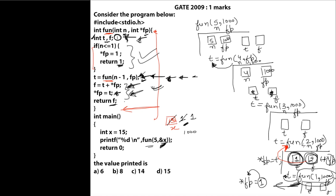In fun(3), the returned value 2 is stored in t. We execute f = t + *fp, which is 2 + 1 = 3, so f stores 3. Then *fp = t stores 2 at location 1000. We return f = 3 to the previous call.